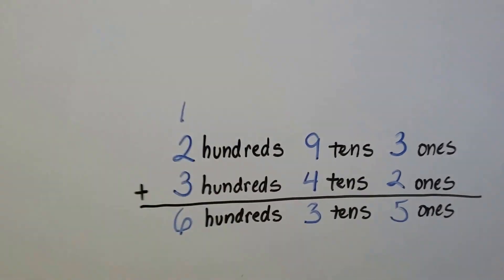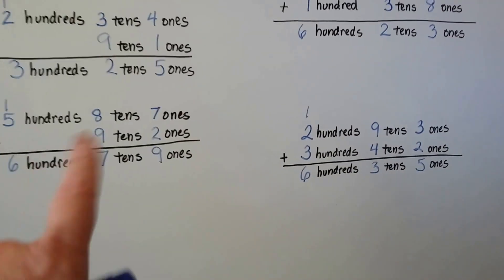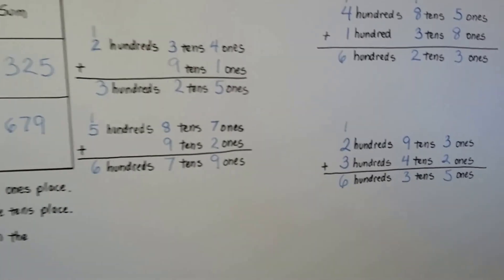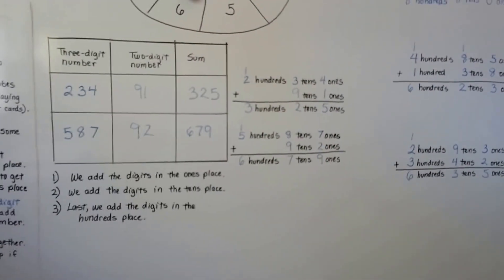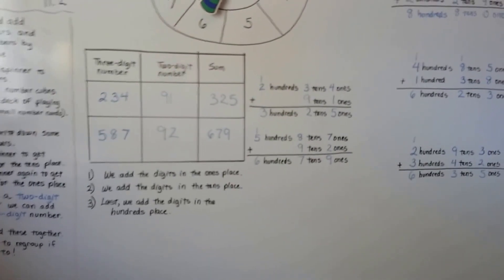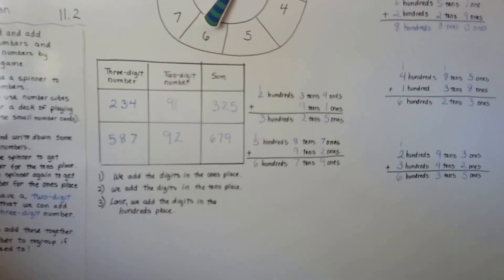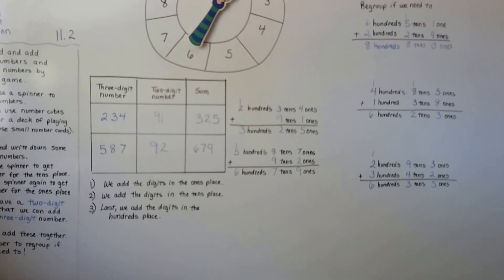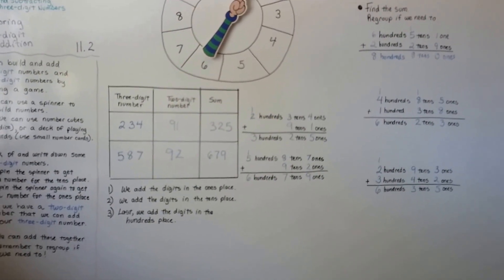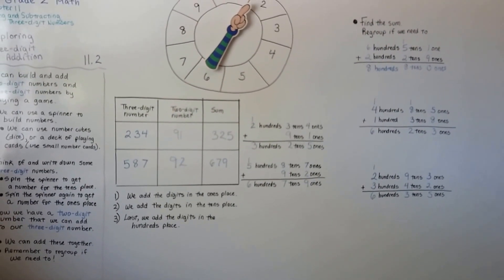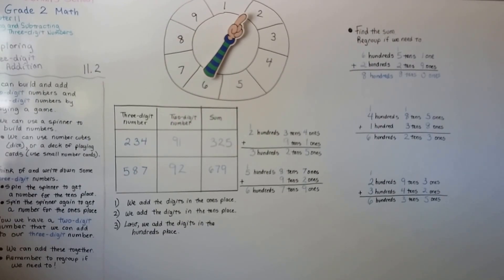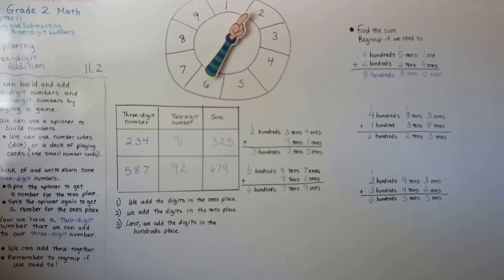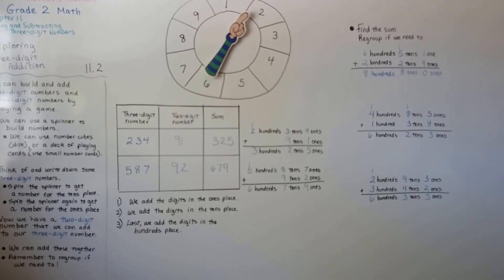So we're going to do this in the next video except we're not going to have the words hundreds, tens, and ones written there — we're just going to have the columns for the place value. So we're going to actually get into adding these three-digit numbers. I hope I'll see you there. Don't forget to hit the like button if you like the video. Bye!